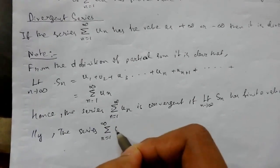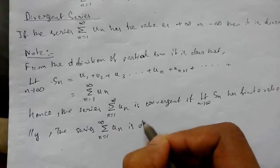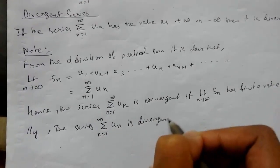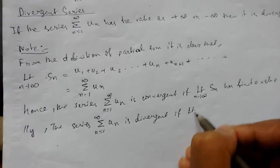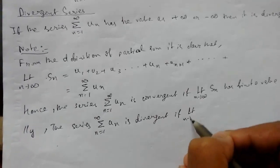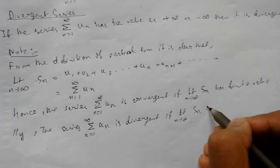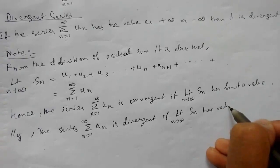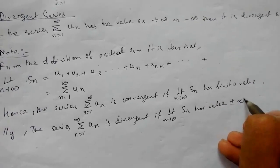Similarly, the series summation n from 1 to infinity of u(n) is divergent if the limit as n tends to infinity of S_n has a value of either plus infinity or minus infinity.